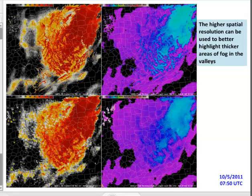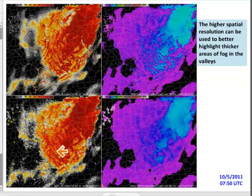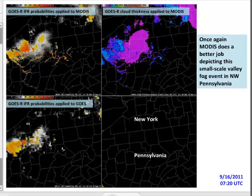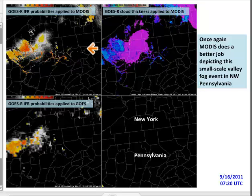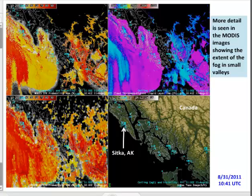GOES-R IFR probabilities can also be computed using MODIS data. The superior spatial resolution of MODIS gives far greater detail to the IFR probability and GOES-R cloud thickness fields, and individual river valleys are more likely to be resolved. While GOES-R IFR probabilities from current GOES satellites can usually detect areas of fog, MODIS can provide users with greater detail to better understand where the fog and low stratus is located. In cases where IFR probabilities from GOES show little signal because small-scale valley fog is below the spatial resolution of the GOES satellite, the higher spatial resolution of MODIS captures the small-scale valley fog and can give an early alert to its development. The better resolution of MODIS data becomes especially apparent at high latitudes, such as in Alaska.